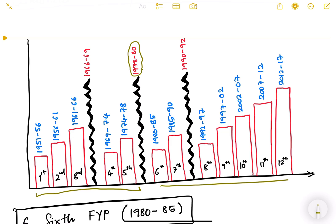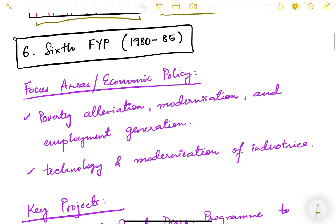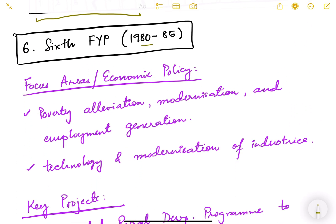The sixth five year plan was from 1980 to 1985. During this period, if we look at the political situation, there was a fresh election and the Indira Gandhi government had again come back to power. They then switched back to the five year plans, which had been kind of aborted in the previous two years.